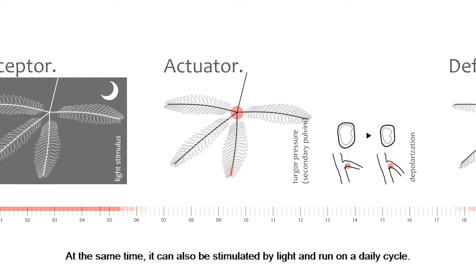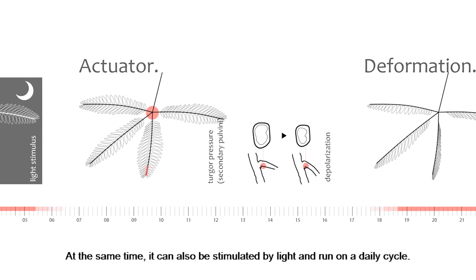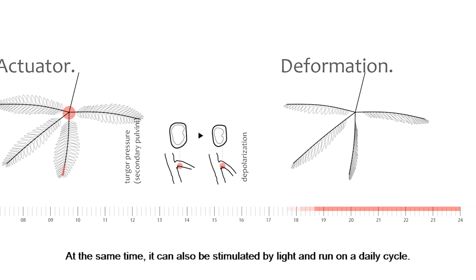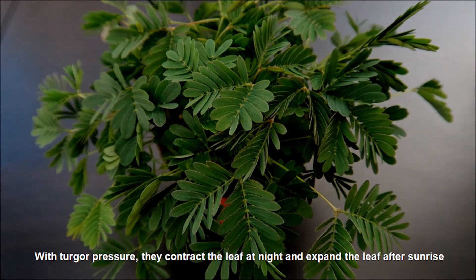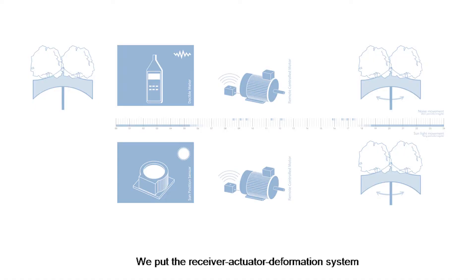At the same time, it can also be stimulated by light and run on a daily cycle. With turgor pressure, they contract the leaf at night and expand the leaf after sunrise.